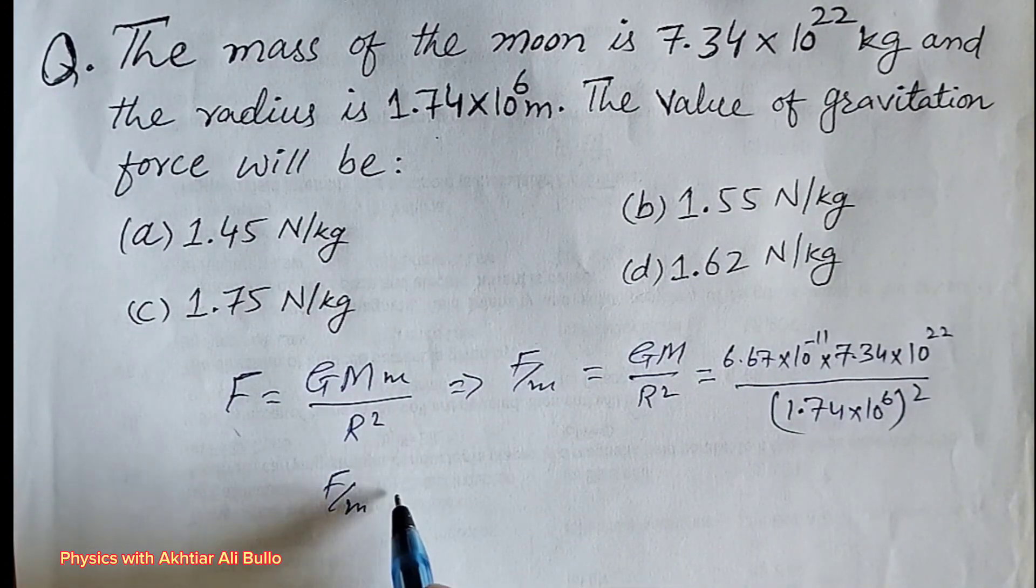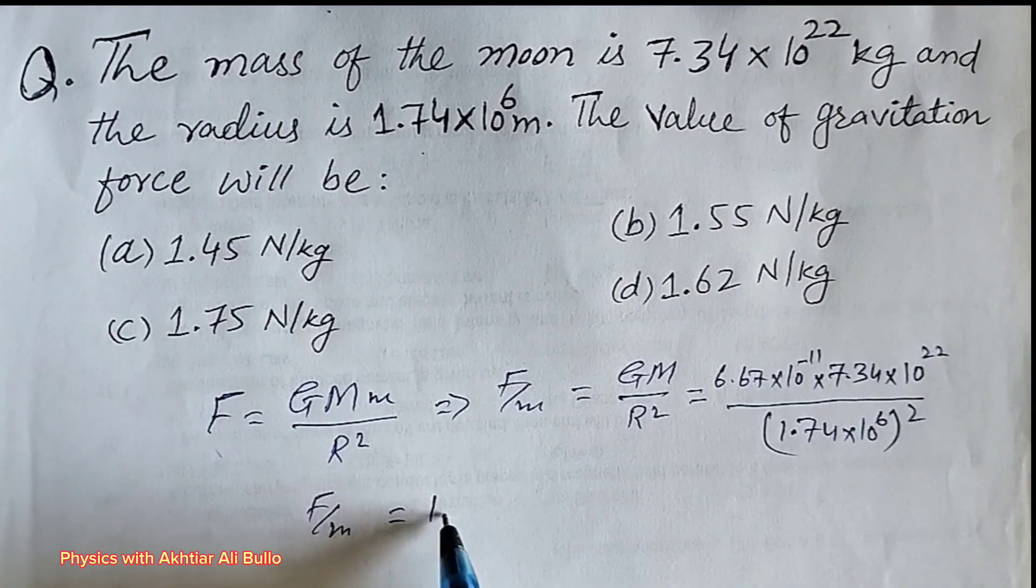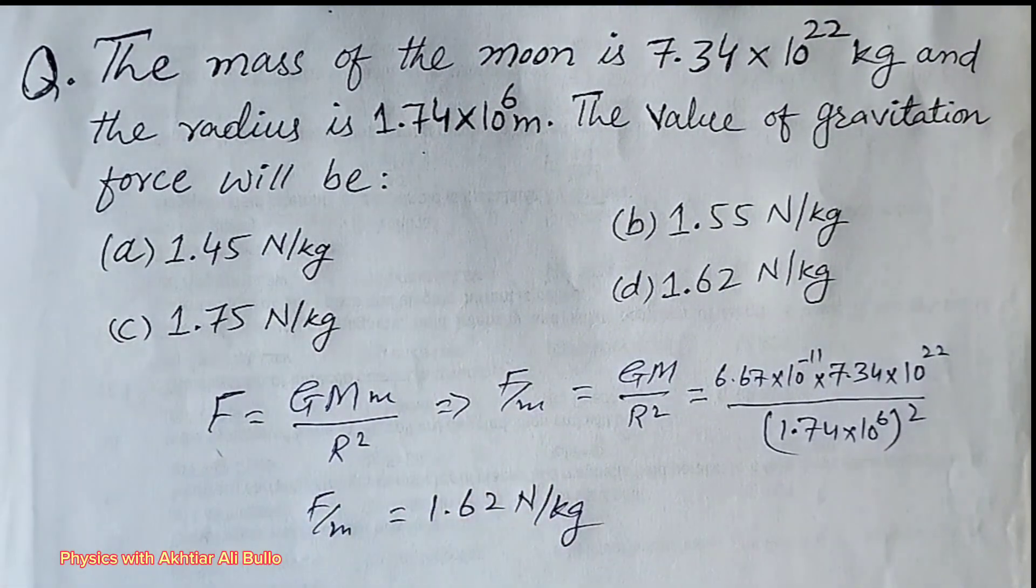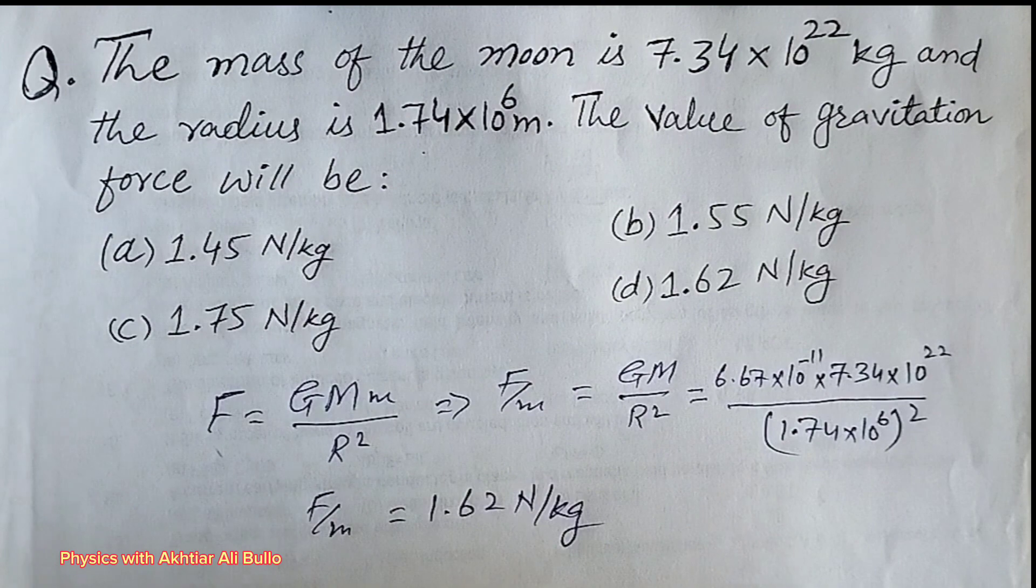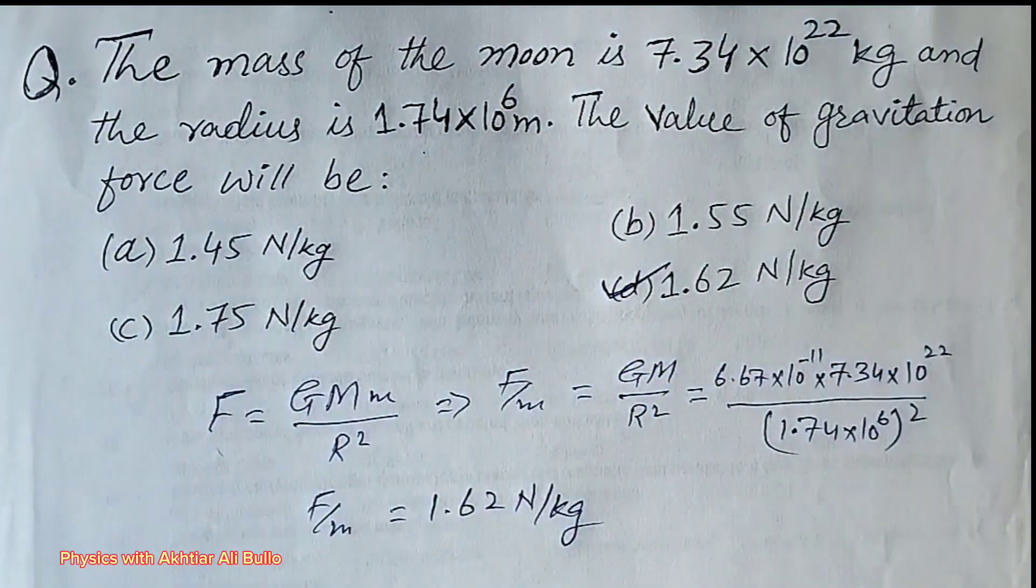After simplification we will get the answer is 1.62 Newton per kg. The correct option will be d, 1.62 Newton per kg.